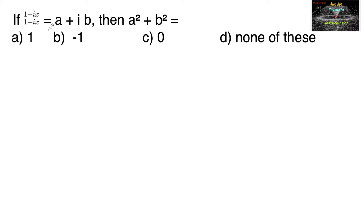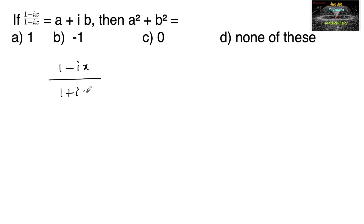If (1 - ix) upon (1 + ix) is equal to a + ib, then a square plus b square is equal to? Given (1 - ix) upon (1 + ix) which is equal to a + ib, a complex number.